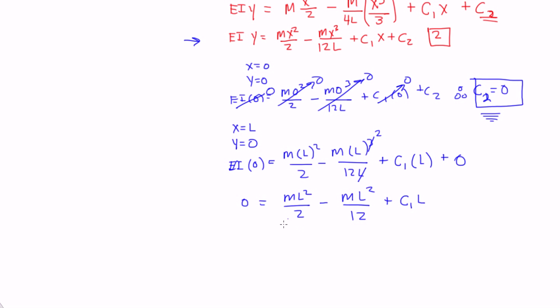So if we solved for C1, let's actually factor out an L there, where we get 0 is equal to mL over 2 minus mL over 12 plus C1, and that means C1 is equal to mL over 12 minus mL over 2, which is, if you solve that out, you should get negative 5mL over 12. So C1 is negative 5mL over 12.